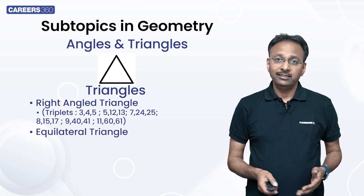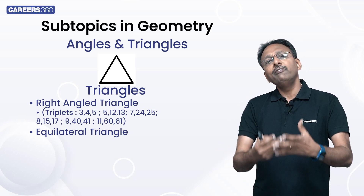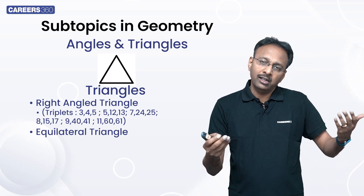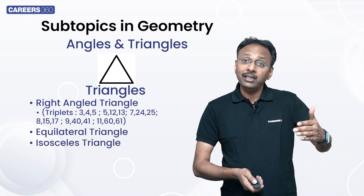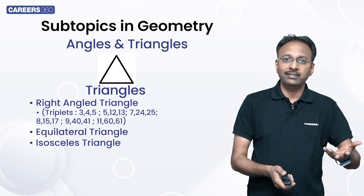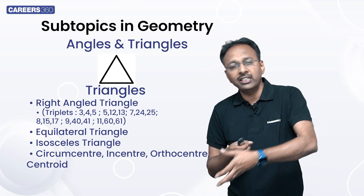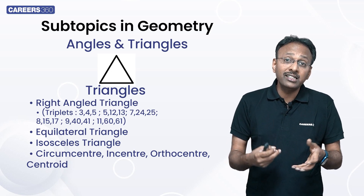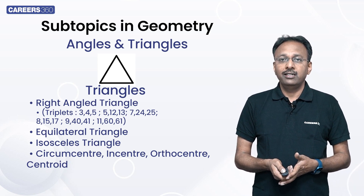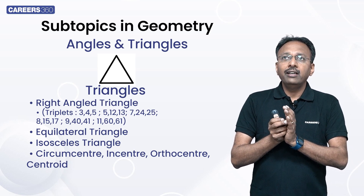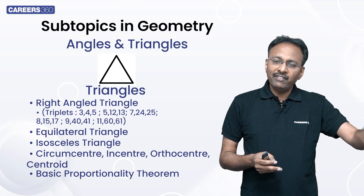Right-angled triangle, then equilateral triangle — remembering that root 3 by 4 times a² is the area of an equilateral triangle will be very important. In right-angled triangles, the area as half base into height is also very important. Then isosceles triangle, including isosceles right-angled triangle. And the basic concepts of circumcenter, incenter, orthocenter, and centroid — each one is a separate concept. Also the basic proportionality theorem, which is another very important theorem. All these are available in your NCERT books.